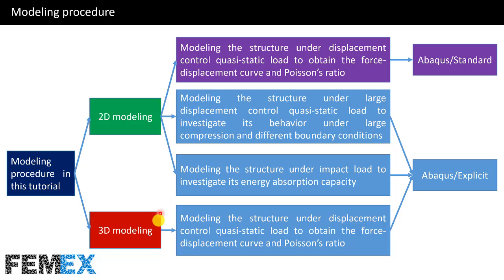Finally, I have done a 3D modeling for the structure under displacement-controlled quasi-static load to obtain the force displacement curve and Poisson's ratio, and it has also been done using the Abaqus Explicit solver. As you can see, two of the models are the same but their solvers are different.